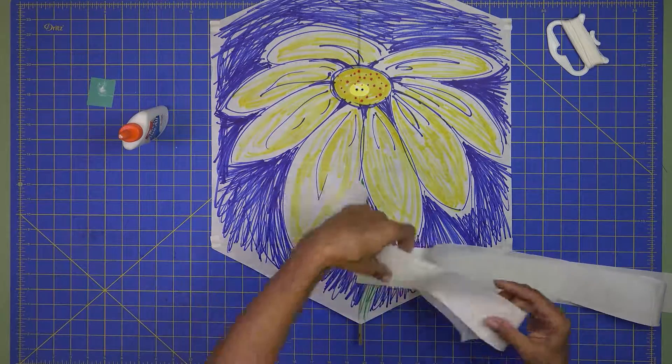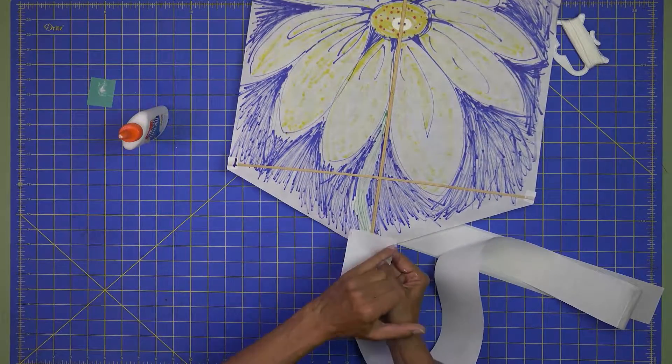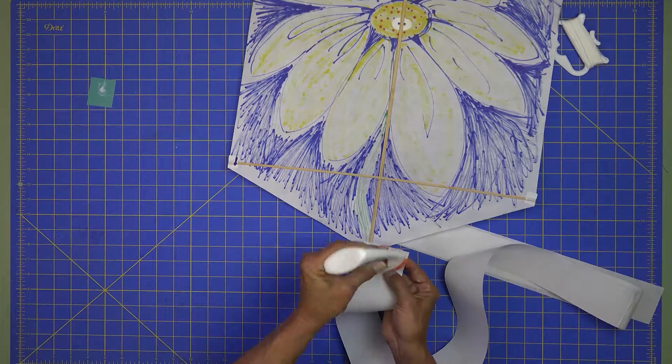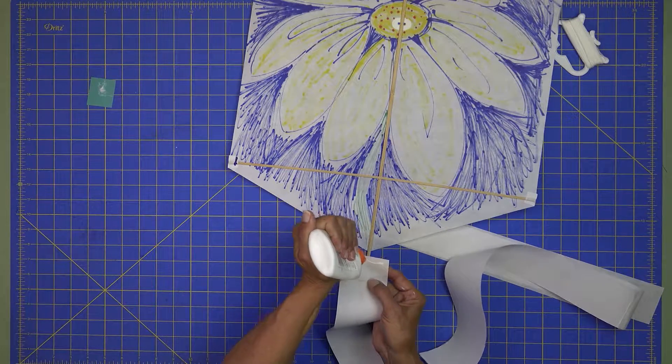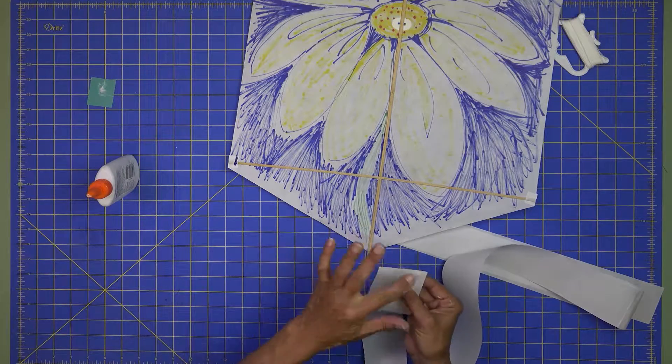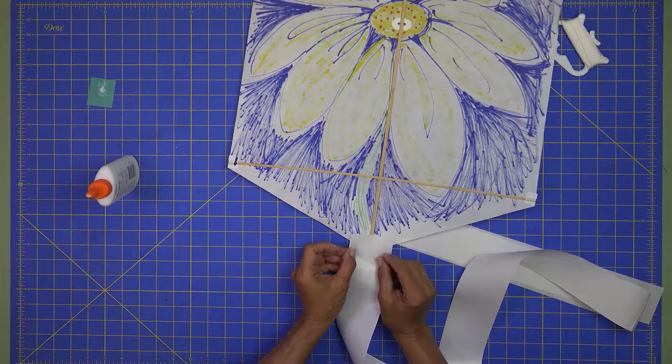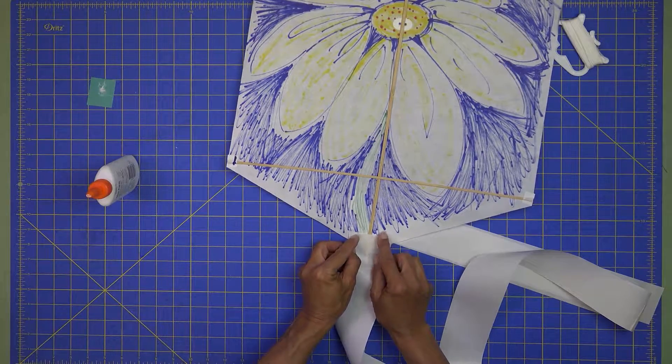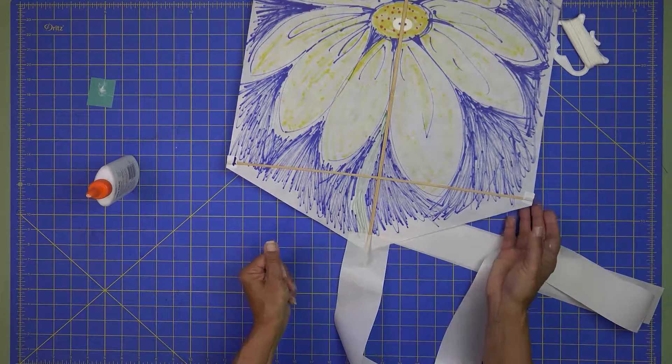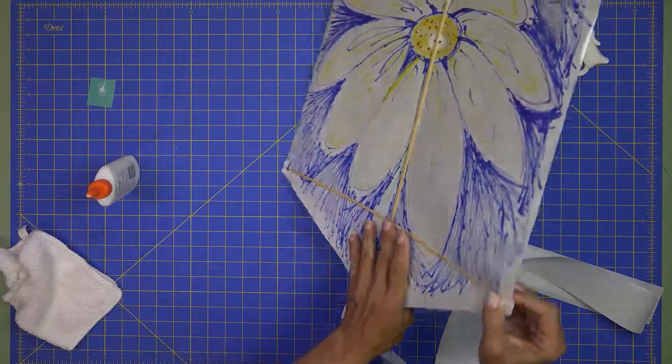And we're going to turn the kite, find one end of the tail. Turn the kite back over. We're going to put another little strip of glue just on the end. There we go. And then we're just going to glue it right across the bottom of the kite. Try to make it as even as possible. Now we have the tail in place.